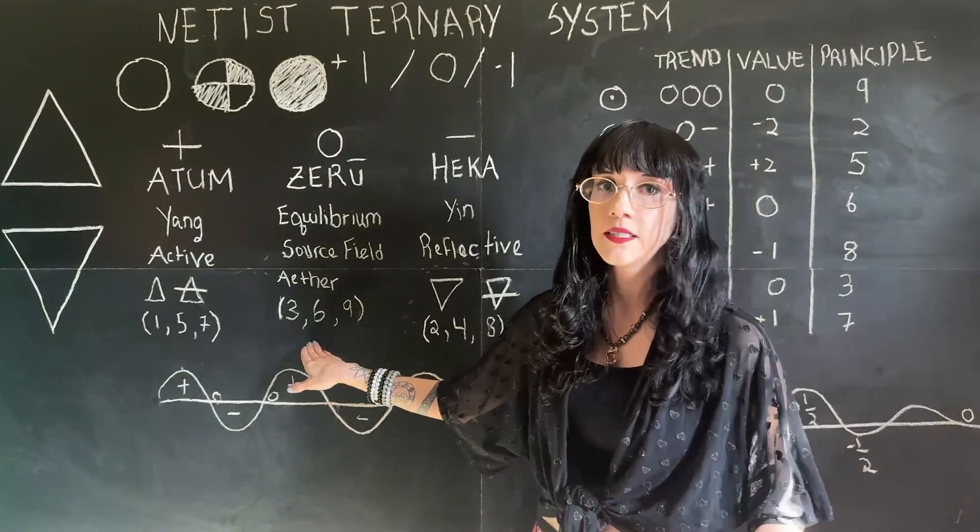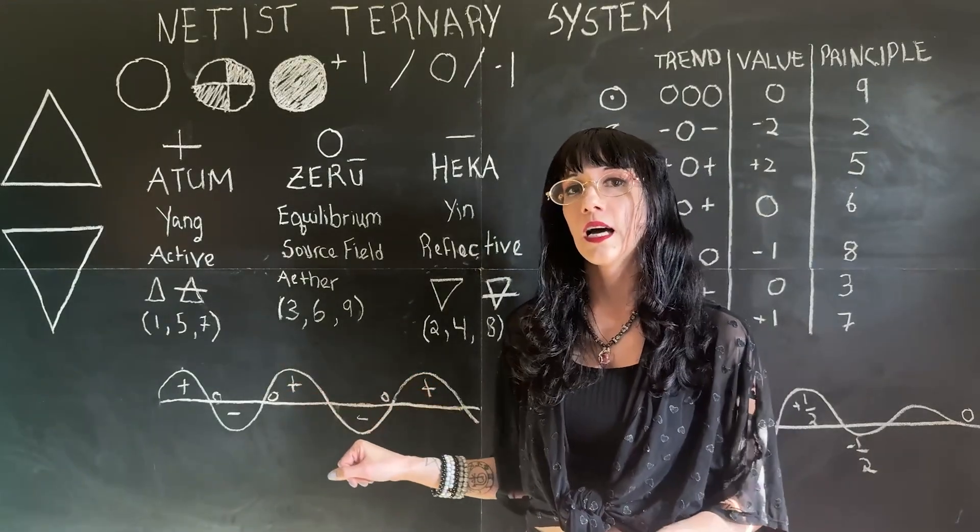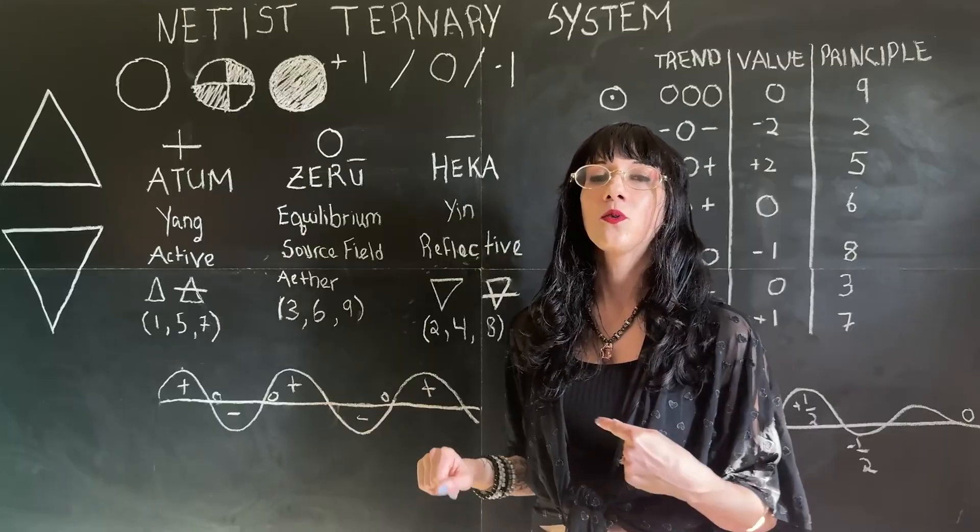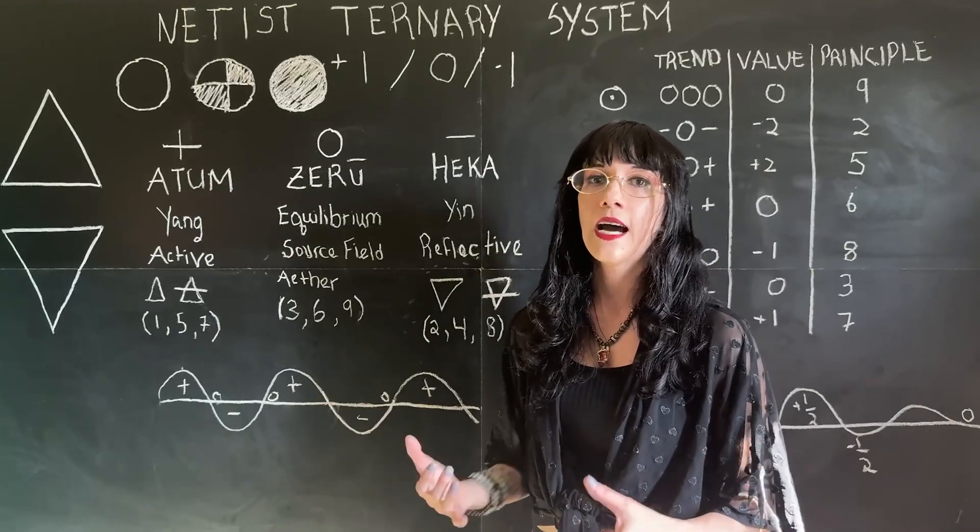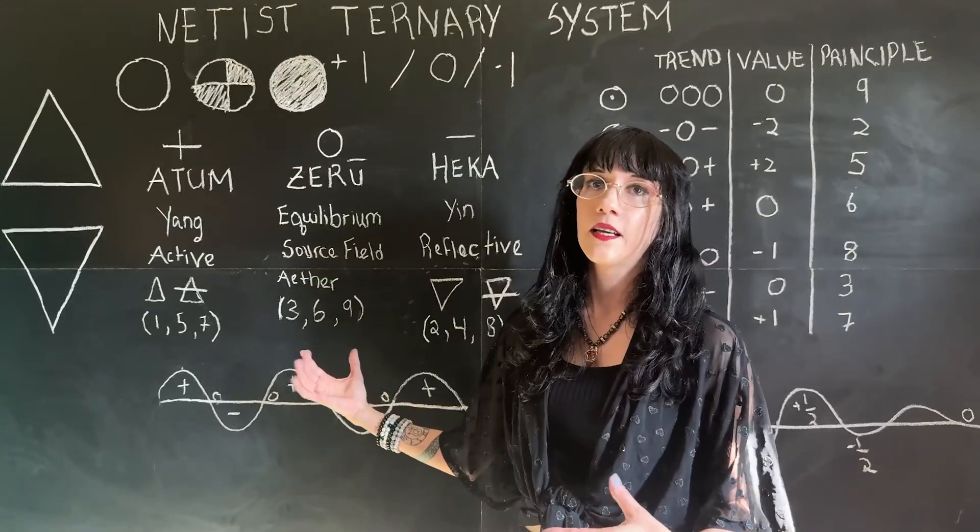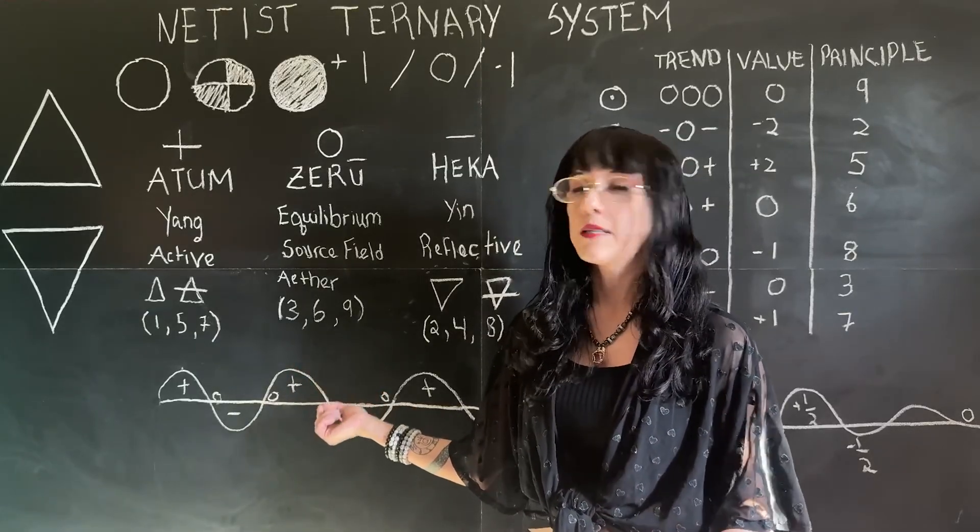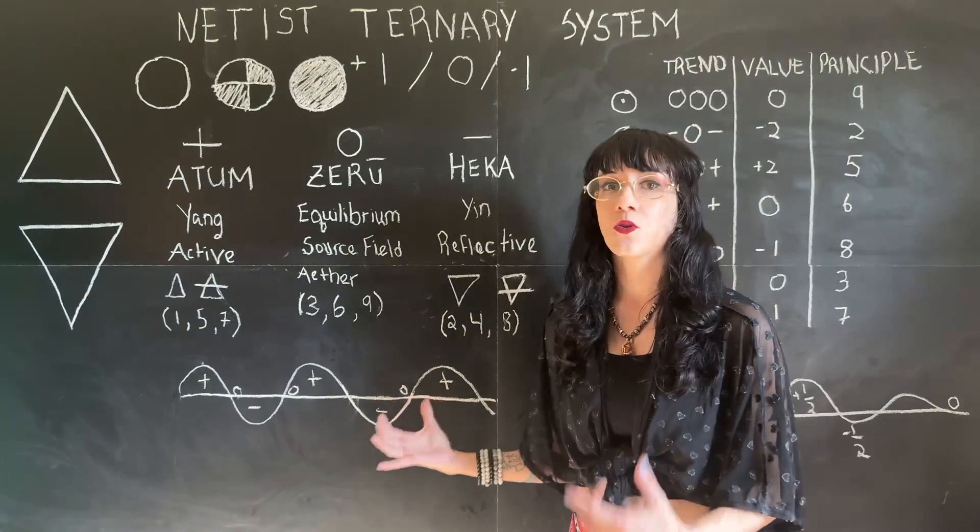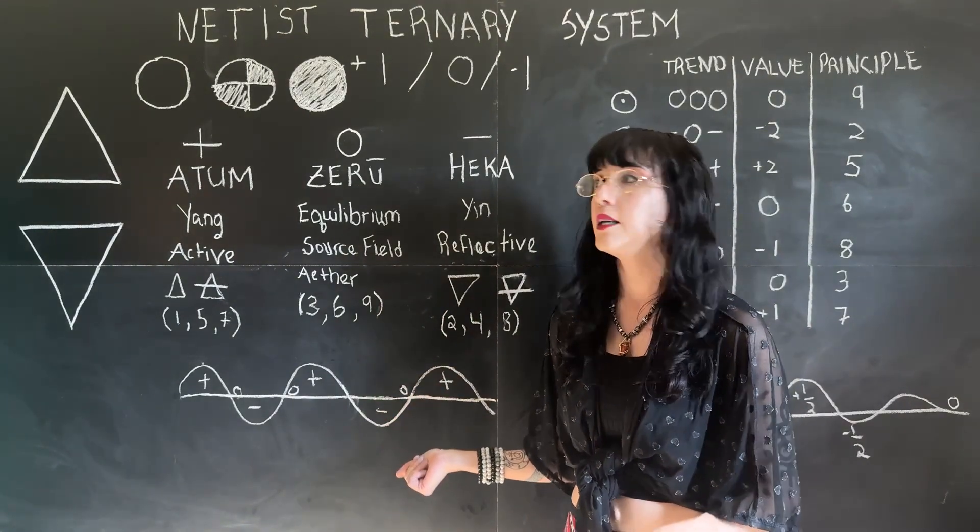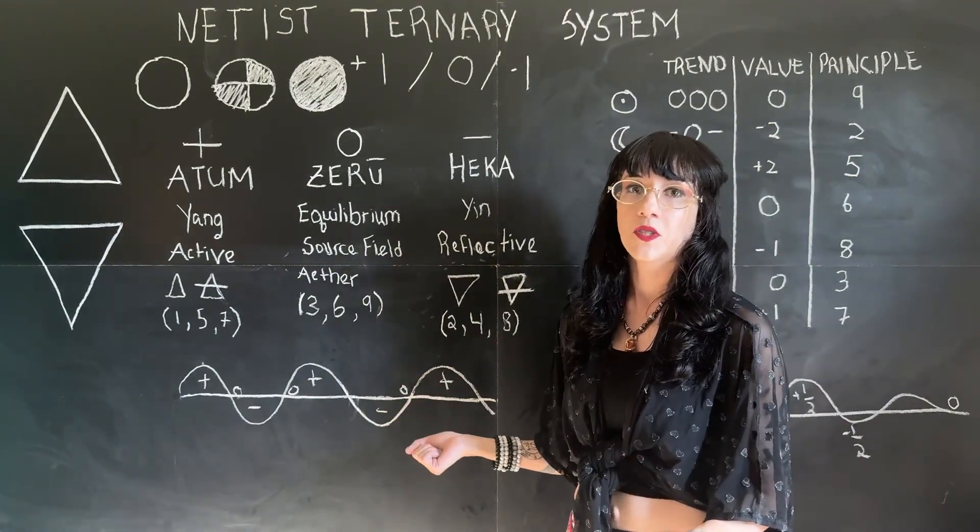And this is represented by numbers three, six, and nine. And if you go to the video on three, six, and nine, you will understand how these really relate to that alignment, that balance. It is incredibly important in netism's cosmology.